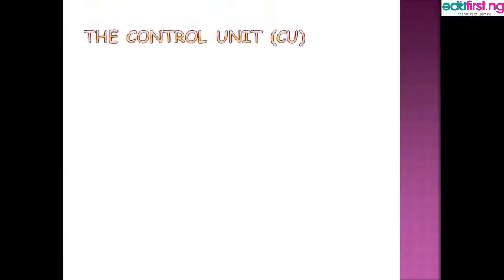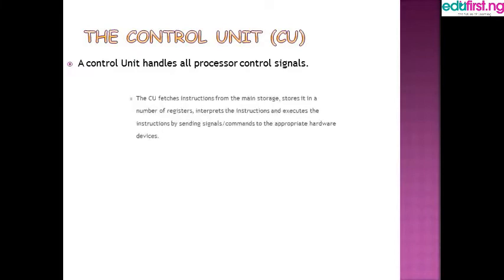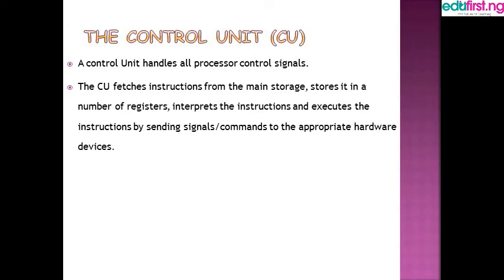The control unit is an important part of the processor that handles all processor control signals. It fetches instructions from the main storage, stores them in a number of registers, interprets the instructions, and executes them by sending commands to the appropriate hardware. The CPU usually stands between the ALU, the memory, and the registers — fetching instructions from one hardware and interpreting them.